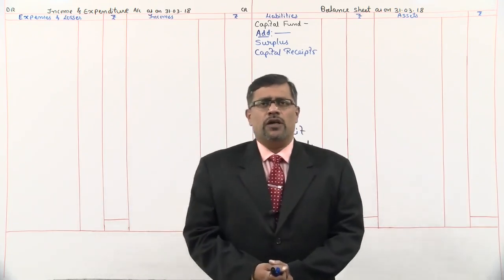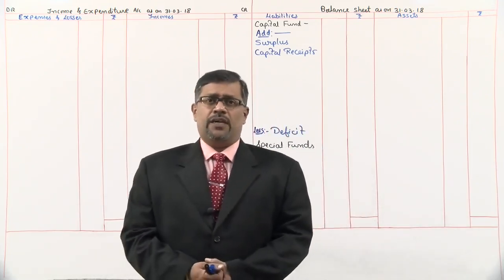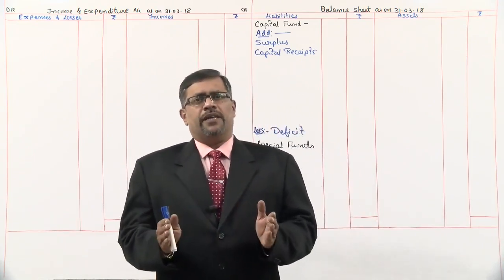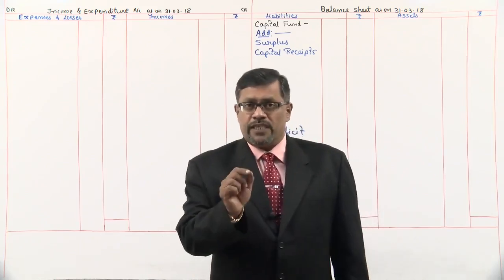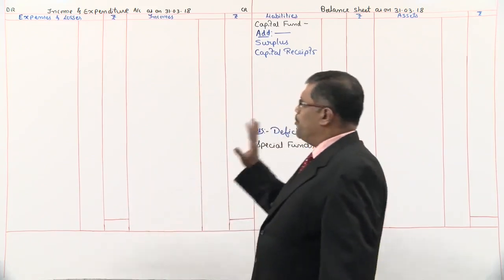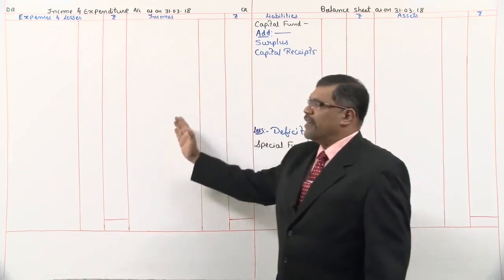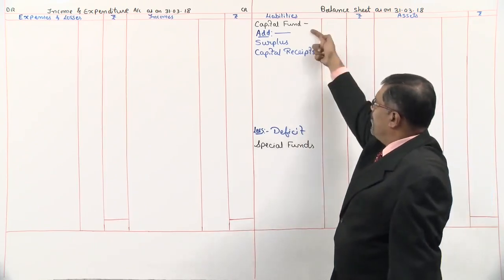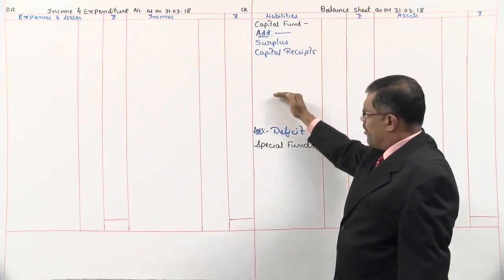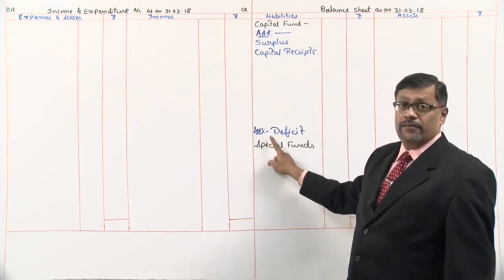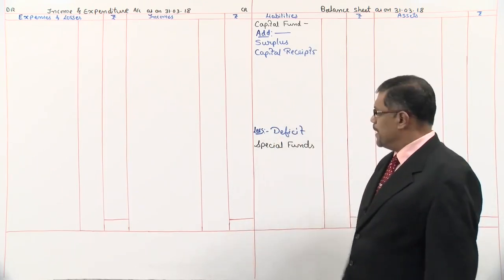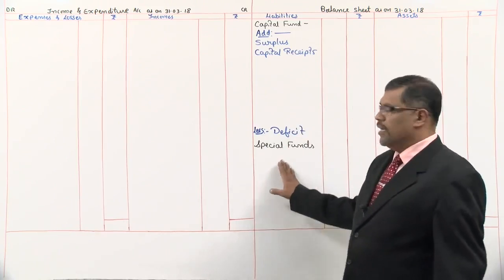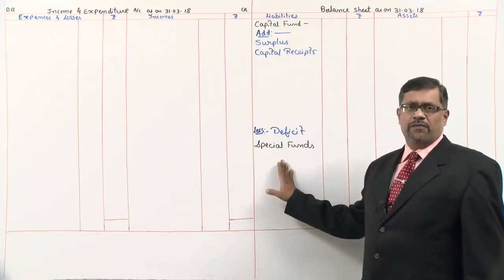In the last video we solved a problem on income and expenditure account and balance sheet. In this video we'll solve one more problem. Keep ready the income and expenditure account as on the closing date and the balance sheet. In the balance sheet, capital fund — add surplus, any capital receipts, less deficit if there is one. If there are any special donations or special funds, we'll take those as special funds in the balance sheet.